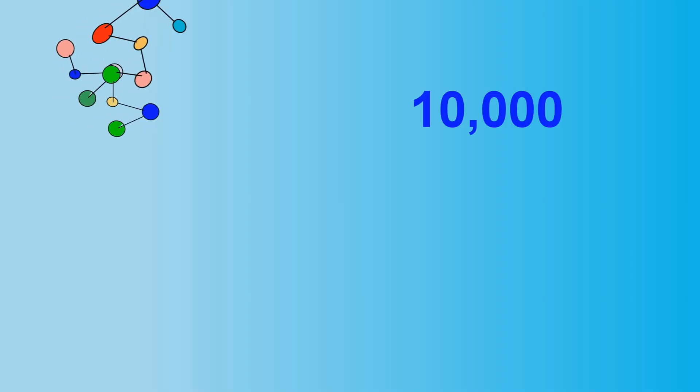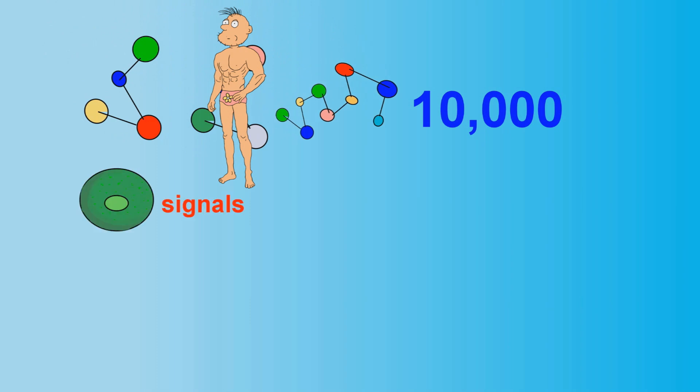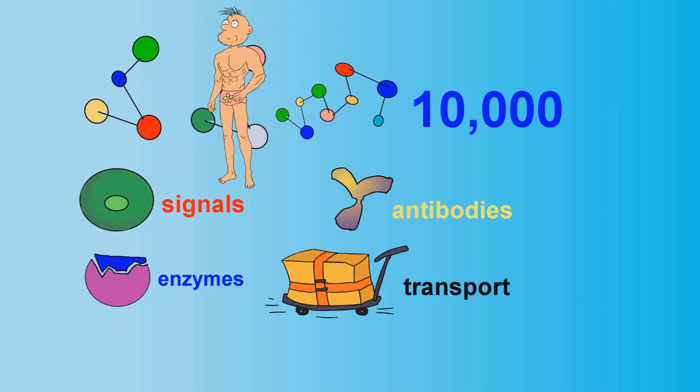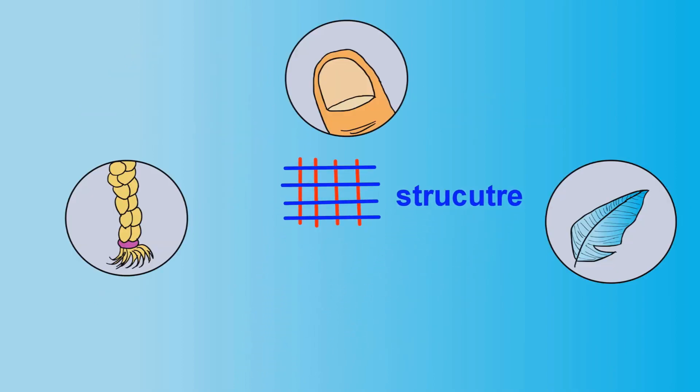There are at least 10,000 different proteins in our bodies being used as cell signals, enzymes, antibodies, transport, or even structure. A few good examples of these structural proteins are hair, nails, feathers, and muscles.